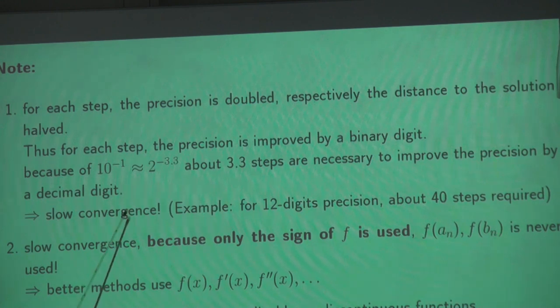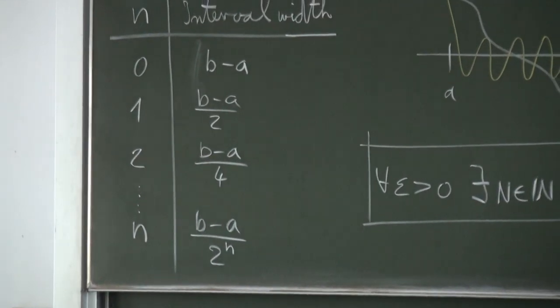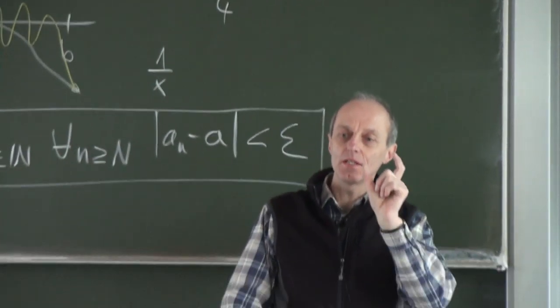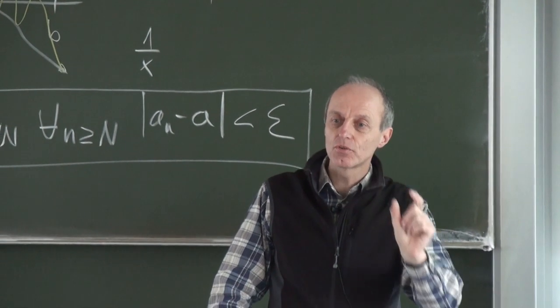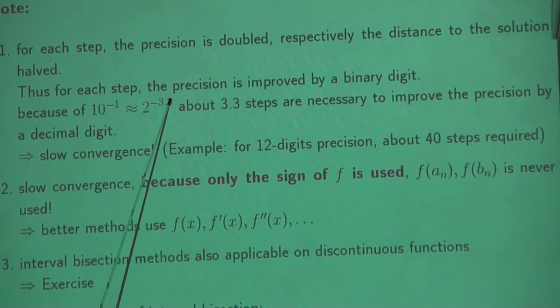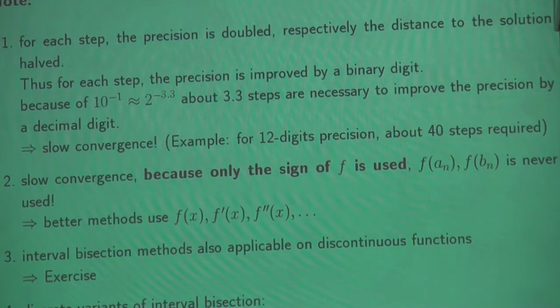Here it is 3.3 steps we need. Because 2 to the power n is what we have in the denominator — the interval width decreases proportional to 2 to the power minus n. Which n do I need to get 10 to the power minus 1, which is one digit? It is 3.3.